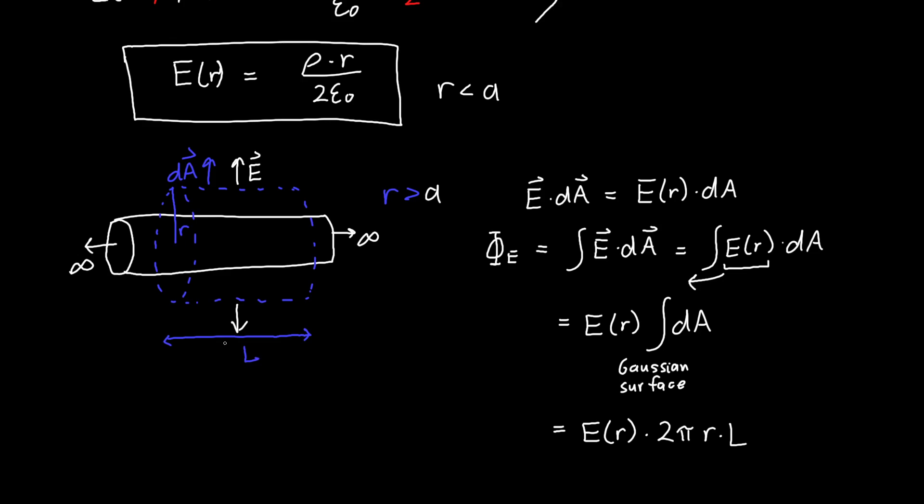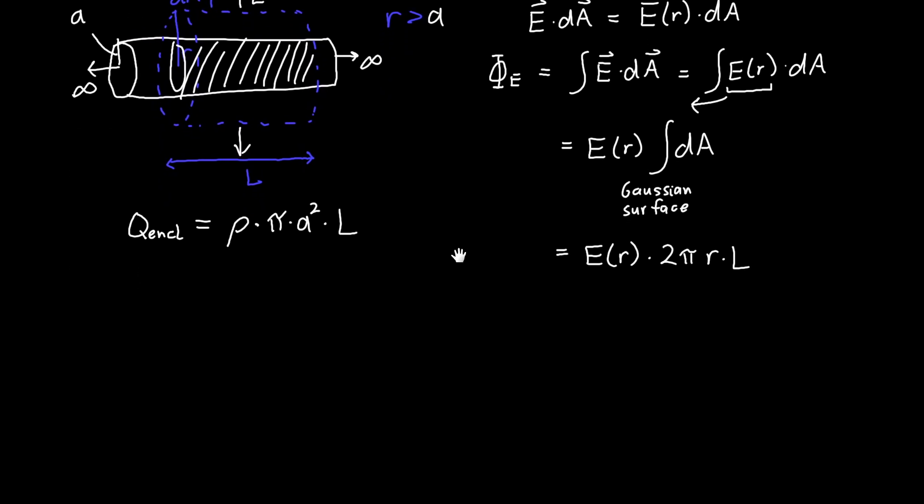Now what about the enclosed charge? So this is a little different than before, because our Gaussian surface is fully enclosing all of the cylinder. So the charge that is enclosed is this region. It's not the volume of our Gaussian surface here that matters, but the volume of our infinite cylinder. Because if I make my surface bigger or smaller at this point, I'm not capturing any more or less charge as long as it stays bigger than my inside cylinder. And so this is just equal to rho, our constant charge density, times the volume of this inner cylinder, which is π a² because we said the radius of this cylinder was a, times the length of the cylinder.